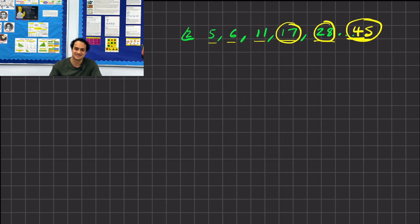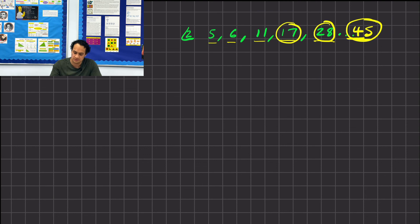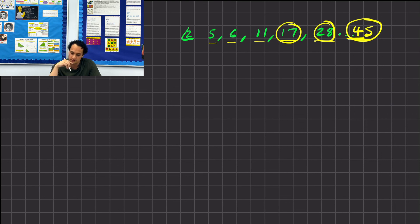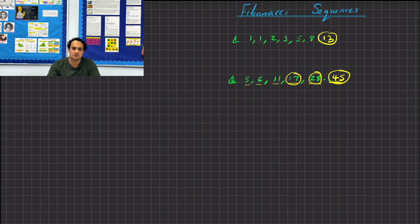Those are all the main sequence types — the ones that come up most in 11 plus exams and Key Stage 2 and 3. You might occasionally get some odd ones that appear. Thanks for watching — like and subscribe, and please feel free to leave any comments below.